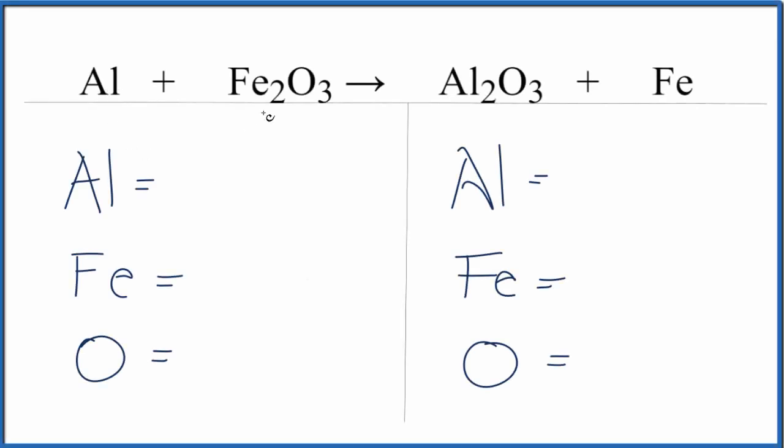In this equation, we have aluminum plus Fe2O3. It's a single replacement reaction. The aluminum is going to push the iron out, and we'll end up with iron by itself, and then we'll have Al2O3 here.